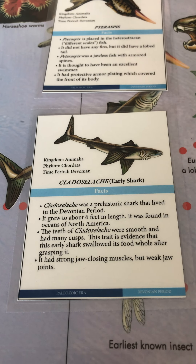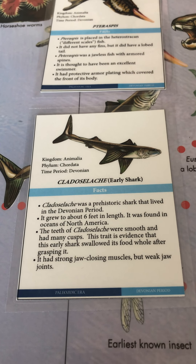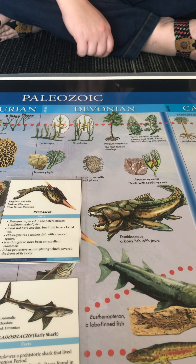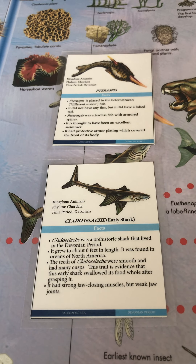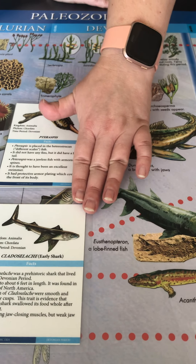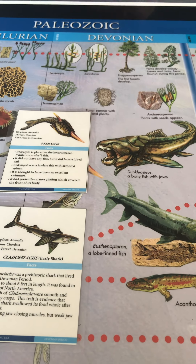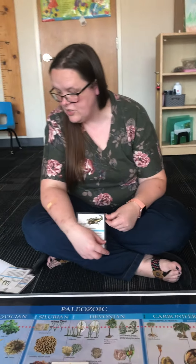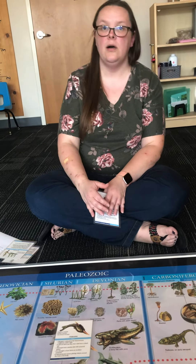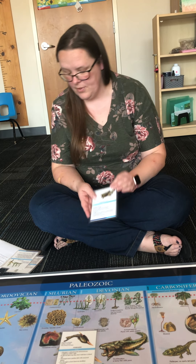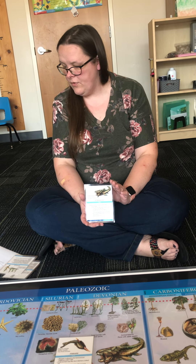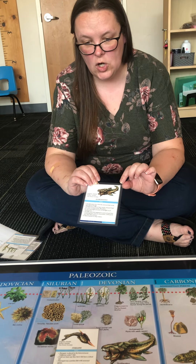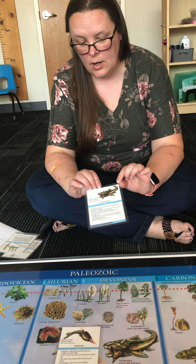Placoderms evolved rapidly into new forms and actually went extinct at the end of the Devonian period. The dominant forms of fish became bony fish. Sharks have cartilage, but bony fish with actual bones became the dominant form. Cartilaginous fishes like the shark were still present — there were still a lot of them — but there were a lot more bony fish. They both evolved simultaneously, and some bony fish developed armor on their bodies.